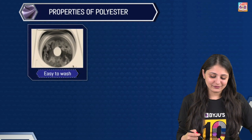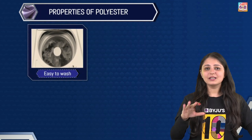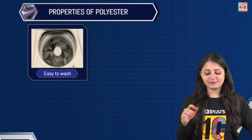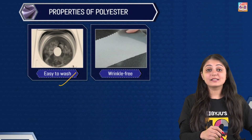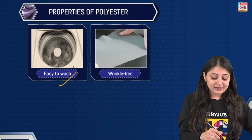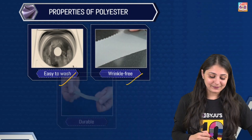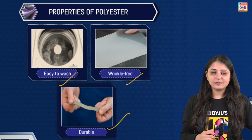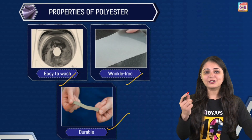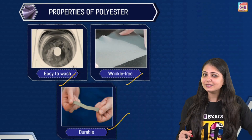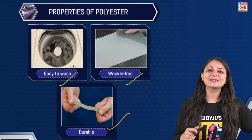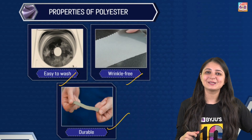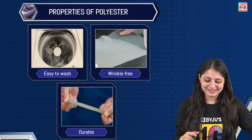Talking about the properties of polyester: first of all, it remains crisp and it's easy to wash. Then of course, it does not get wrinkled easily. It is durable, and if you touch it you'll figure out that it's soft also. So these are the important properties of polyester.